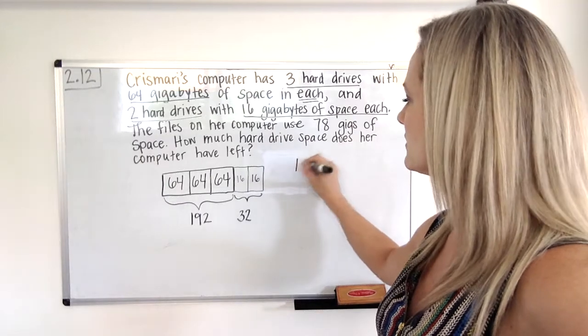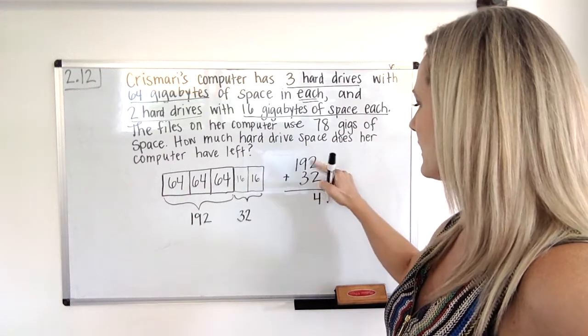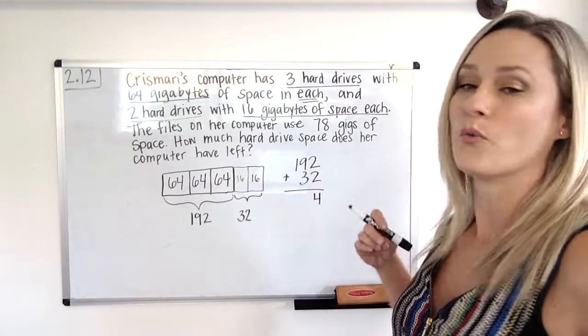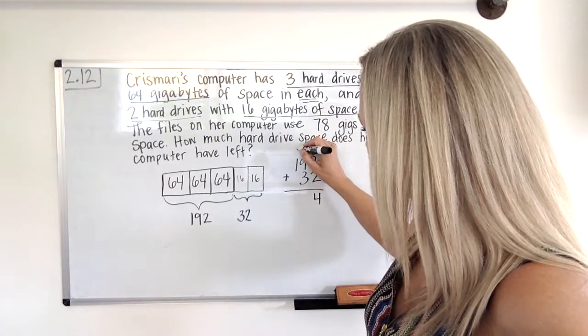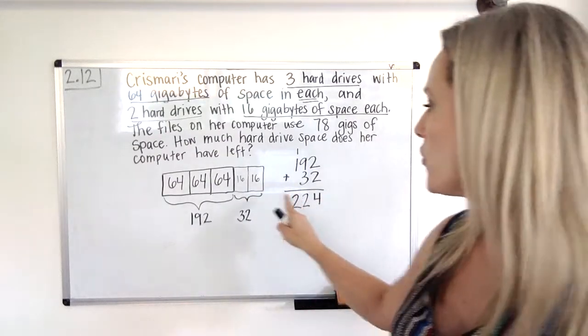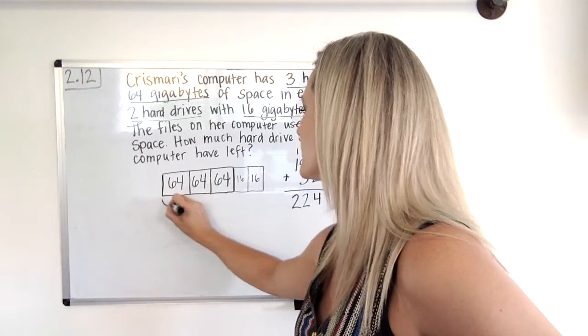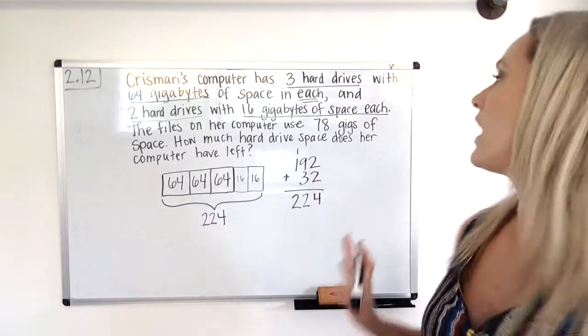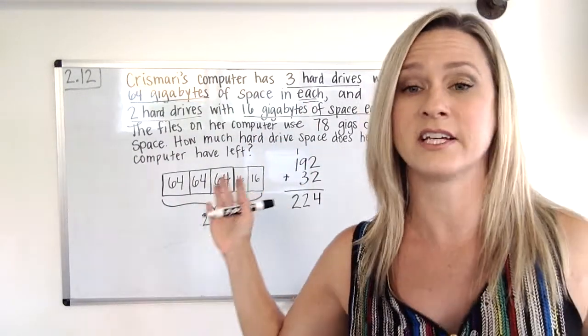So 192 plus 32. 2 plus 2 is 4. 9 plus 3. Or really 90 plus 30, right? So 90 plus 30 is 120, otherwise known as 12 tens. And 1 plus 1 is 2. Okay, so this whole thing right here is worth 224. So I actually think I'm going to go ahead and do that. 224. Okay, so now I know in Chris Marzi's computer, she has 224 gigs of space total.